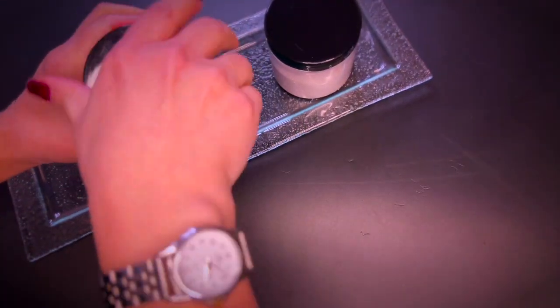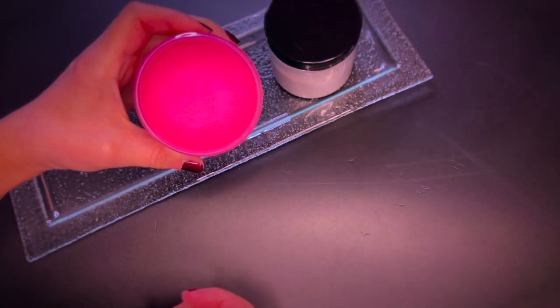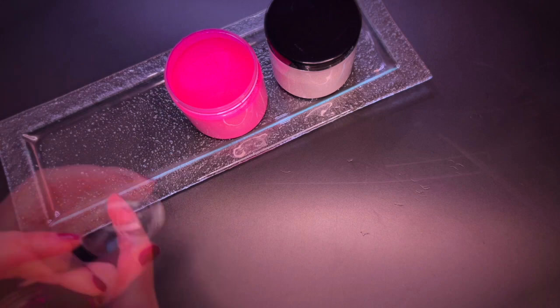For colorant I chose this vibrant pink pigment that I will mix with some rubbing alcohol to make it easier to disperse with the melt and pour soap.